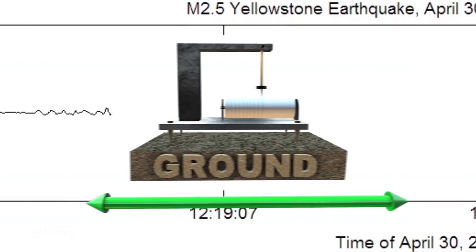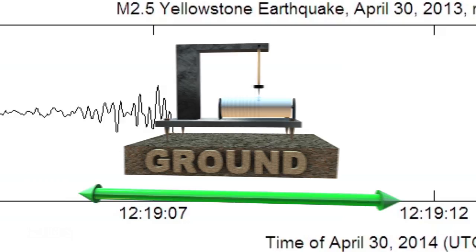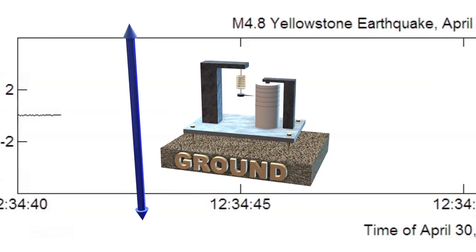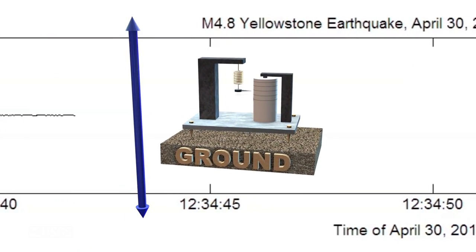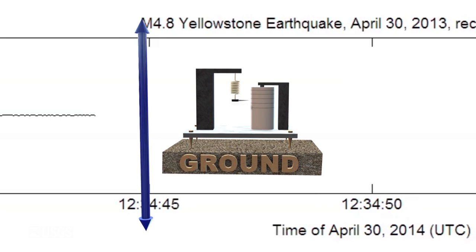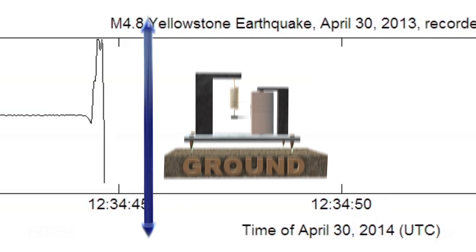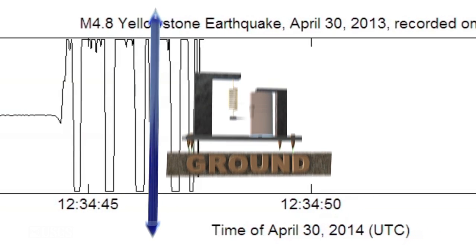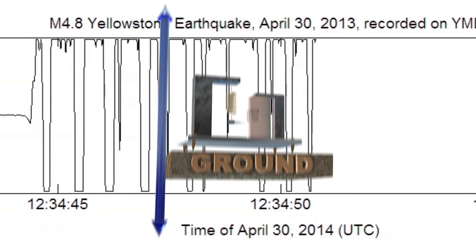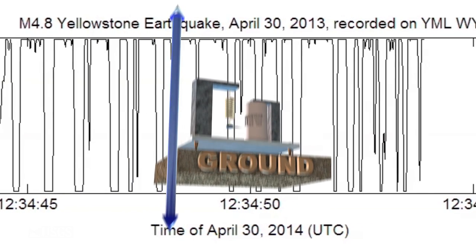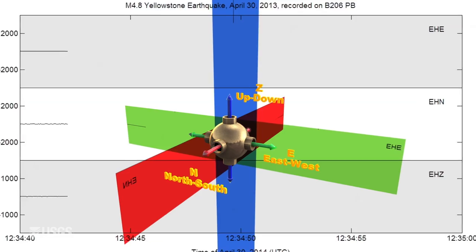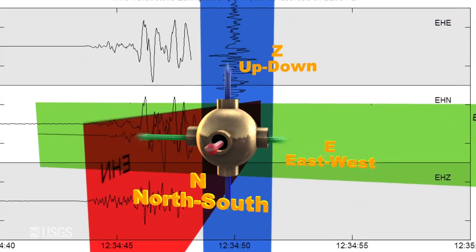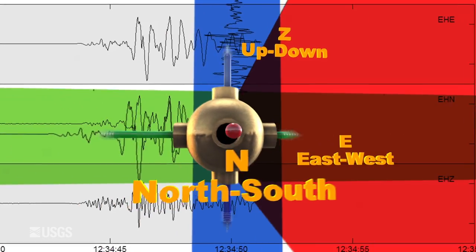Seismometers measure vibrations — more vibration, more wiggle. Some seismometers measure only up and down. Sometimes they shake too much and the data are off-scale. Some seismometers record in all three dimensions.